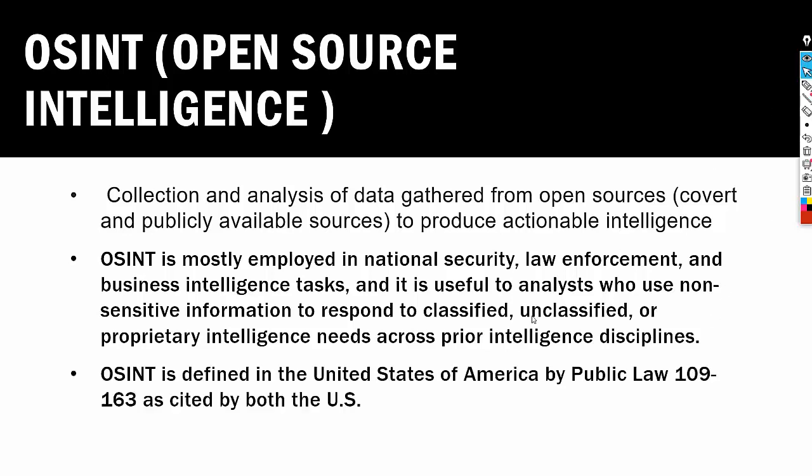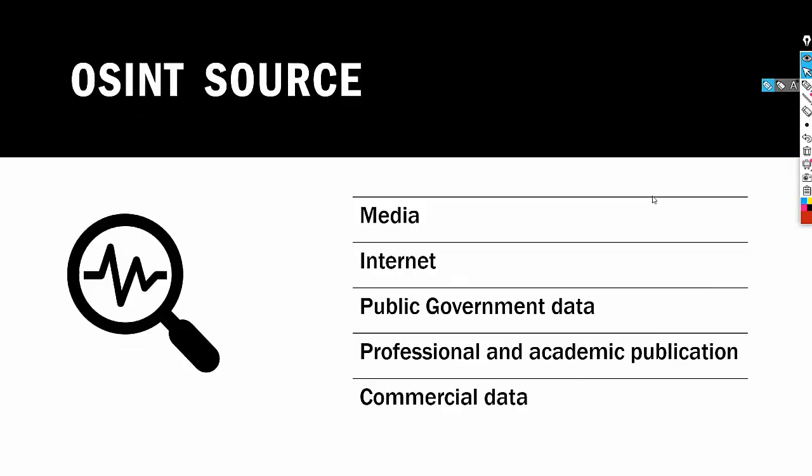Initially, the OSINT term was introduced in the United States, amended as public law 109-163, stated by the US. The first source from which we can collect information is media — media can be print, newspaper, magazine, radio, and television from across and between countries. A lot of information is published in media and from there we try to extract information.